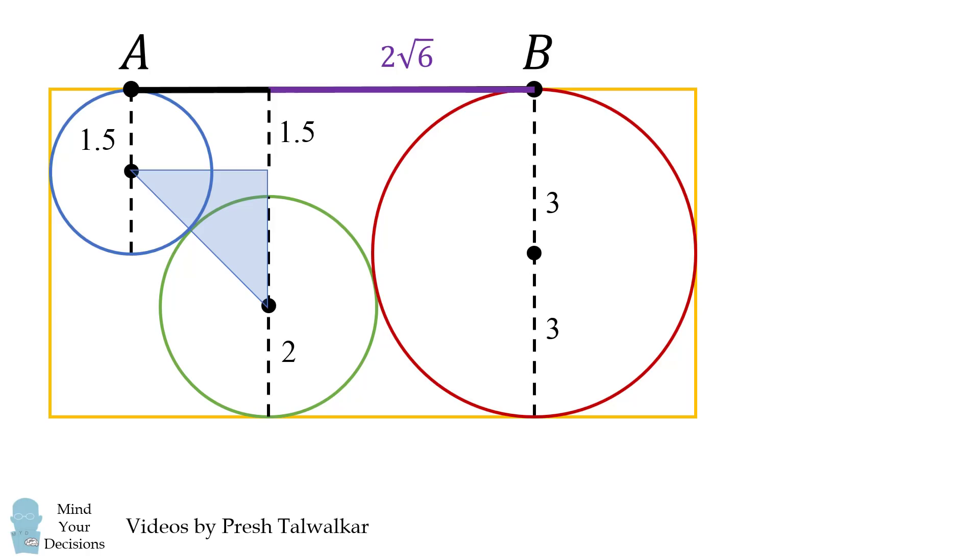Now the entire vertical distance will equal 3 plus 3. So we can figure out the leg of this right triangle as equal to 3 plus 3 minus 1.5, that's the radius of the blue circle, and minus 2, that's the radius of the green circle. So this vertical distance will equal 2.5. That's one leg of this triangle.